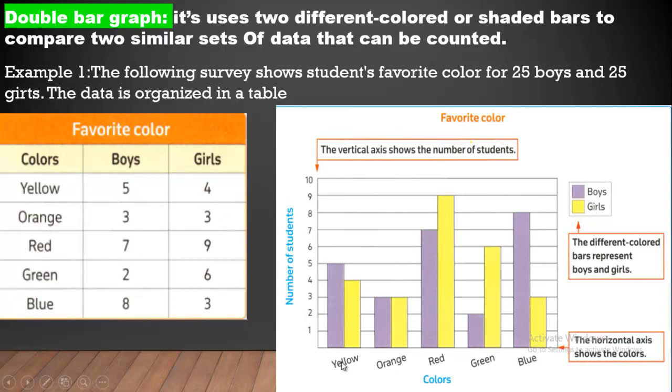Yellow, orange, red, green, blue. We have the horizontal axis shows the colors, and the vertical axis shows the number of students. We have boys and girls here, so we call it double bar graph.